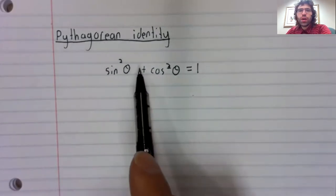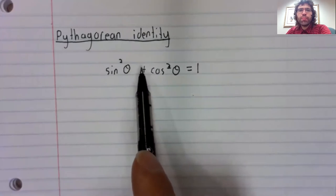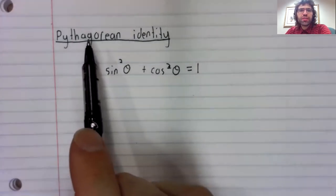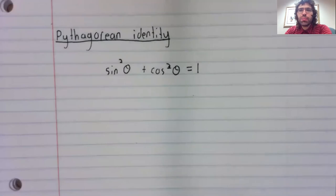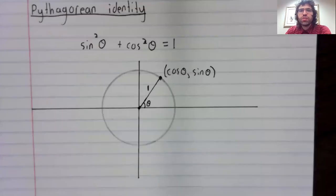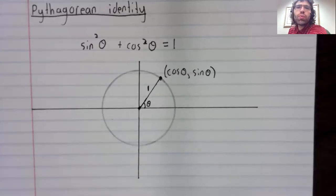Where this equality comes from, and also where it gets its name, is the unit circle definition of the cosine and the sine.